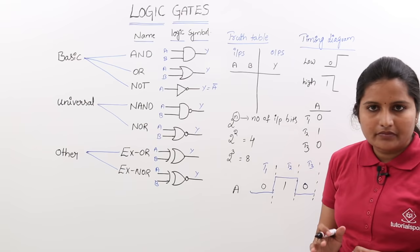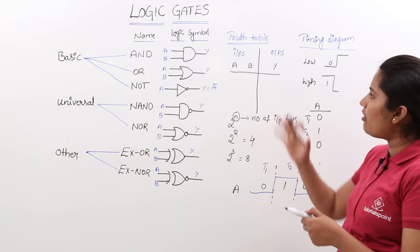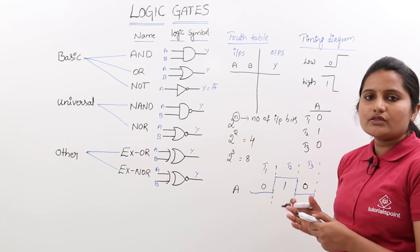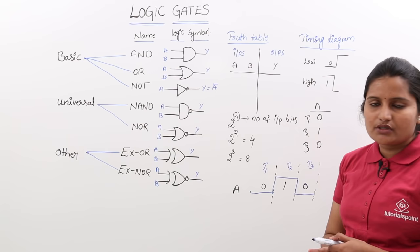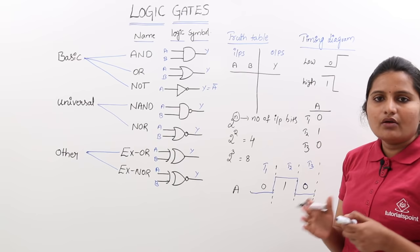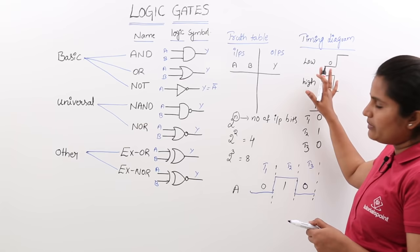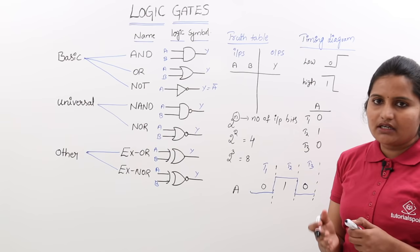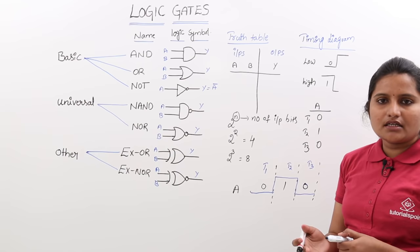In the same way, we can have different timing diagrams for all truth table variables — that means both input and output variables. In exams, we may get questions on truth tables and timing diagrams. They may provide a truth table or timing diagram and, by observing the values, we have to identify which gate it is related to.